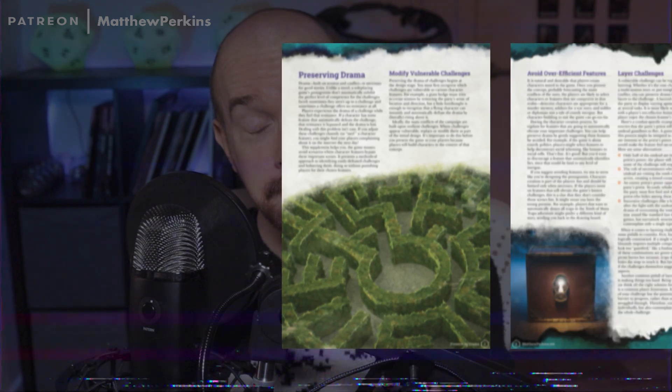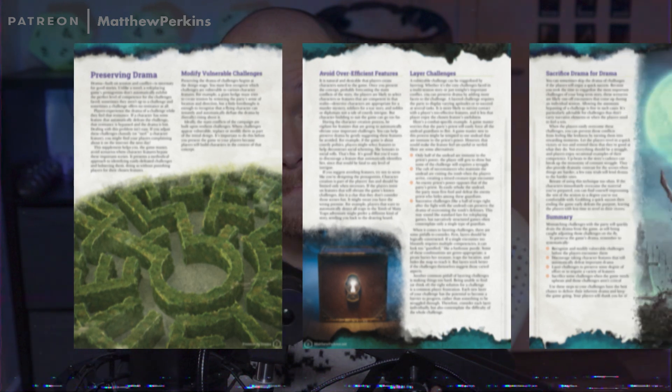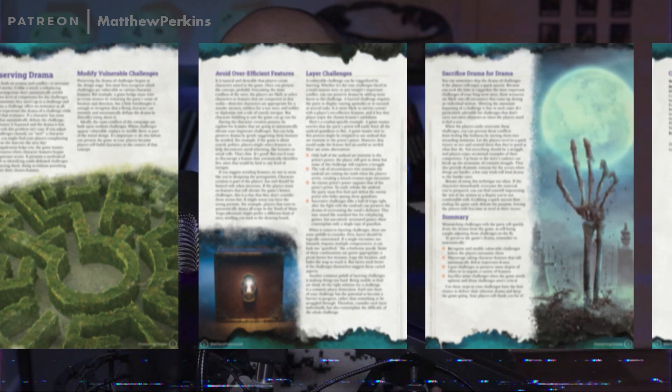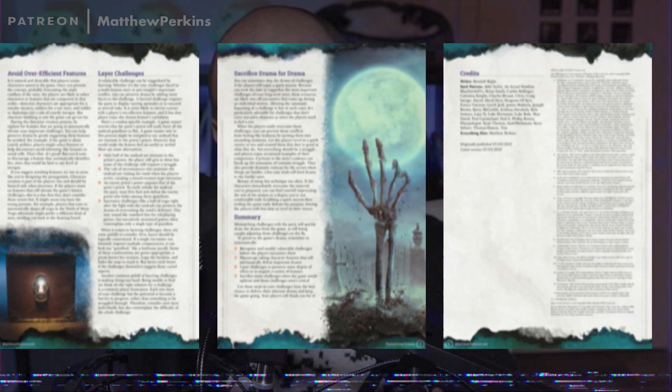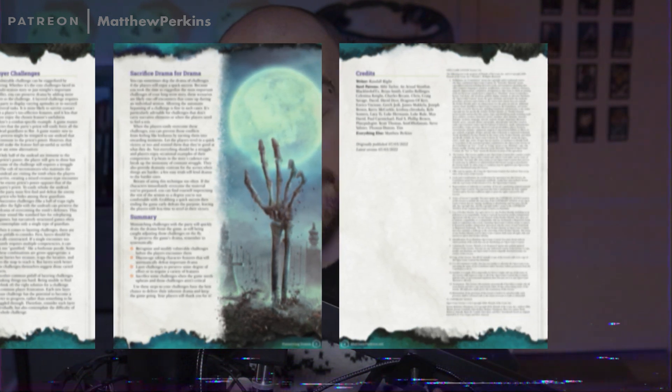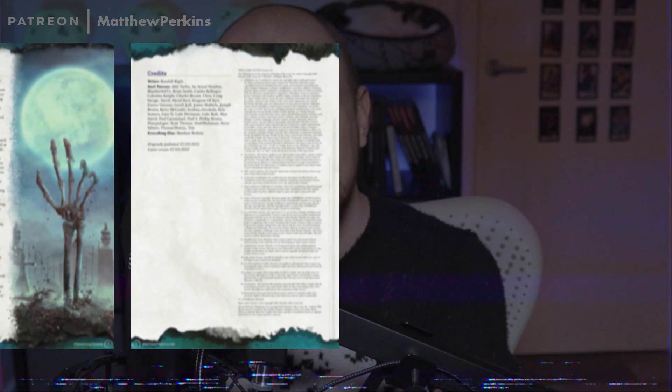So I have a PDF on Patreon right now that you can get for five bucks. This PDF covers how to identify those problems where players' abilities might skip challenges that you have in your game, and then how to address that problem in a way that preserves the drama of your challenge and respects the player's agency. So get it right now on Patreon. Back to the video.